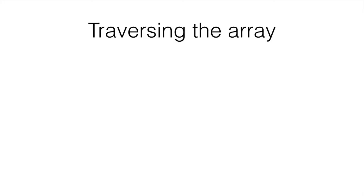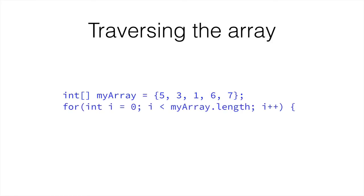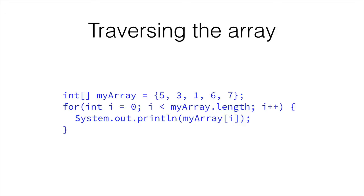So how do we traverse the array? Let's say we have an array with 5 numbers called myArray, and it has the numbers 5, 3, 1, 6, and 7. The way we do it is that we have our index, and then i is less than the length of the array, and then we increase i. And then we print the array at index i, and we close the for loop.